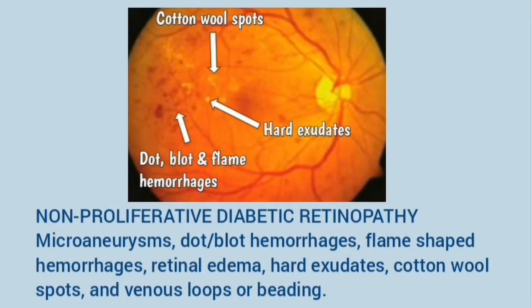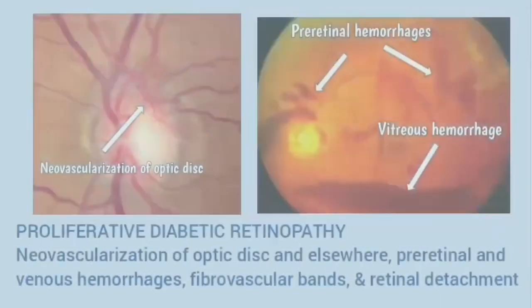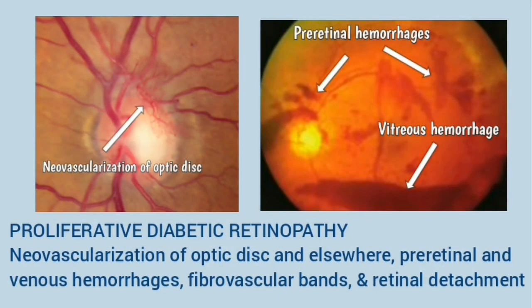This is non-proliferative diabetic retinopathy, characterized by microaneurysms, dot and blot hemorrhages, flame-shaped hemorrhages, retinal edema, hard exudates, cotton wool spots, and venous loops or beading. This is proliferative diabetic retinopathy — on the left you can see neovascularization of the optic disc, and in the right image there are pre-retinal hemorrhages, vitreous hemorrhage, fibrovascular bands, and retinal detachment.